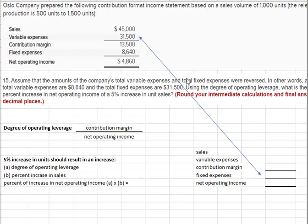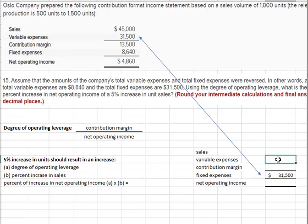What it says is to flip the variable and fixed costs from the original scenario. The original scenario had variable at 31.5, so we're now going to make that fixed. And the variable expenses are what the fixed used to be. So the total expenses are the same — just what was variable is now fixed, and what was fixed is now variable.